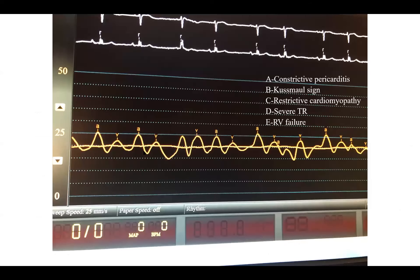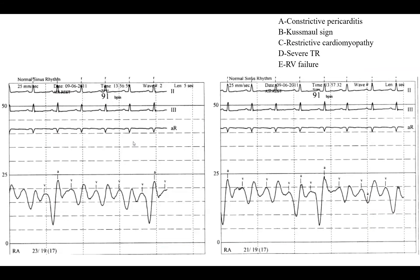I'll make it easier with this tracing — from another patient but similar. I made it easier by showing you the mean line. The RA pressure is elevated without respiratory variation. So it's an elevated pressure — that's the first thing you notice. But importantly, the mean pressure doesn't change at all. You do get some dipping — a wave dipping — and that wave is a Y descent: it comes after V wave, before the A wave. So you have intermittent dipping of the Y descent, but the mean pressure is invariable.